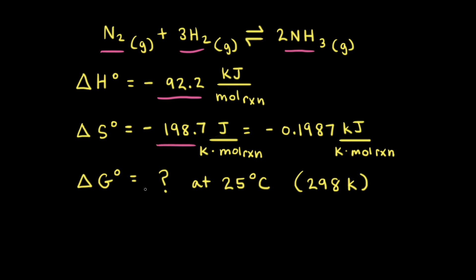Our goal is to calculate ΔG⁰ for this reaction at 25 degrees Celsius. Remember, if ΔG⁰ is negative, the forward reaction is thermodynamically favorable. But if ΔG⁰ is positive, the forward reaction is thermodynamically unfavorable. Since the change in enthalpy is negative and the change in entropy is negative, whether or not ΔG⁰ is negative depends on the temperature.